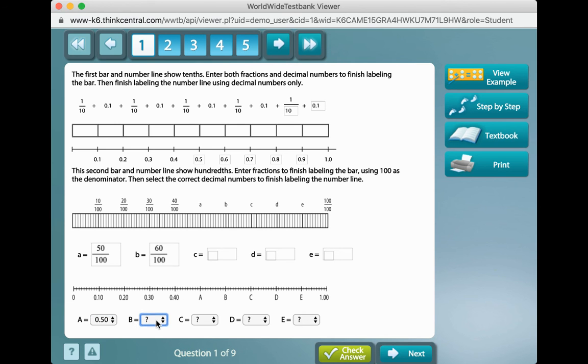A would have to be fifty-hundredths. B would then be another ten-hundredths. So, it would be sixty-hundredths. And C would have to be seventy-hundredths. You can figure out D and E on your own.